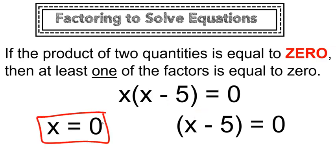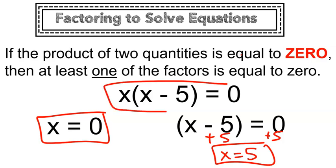So that means that x could potentially be 0 or x could potentially be 5. Either one of these numbers would make the equation true.